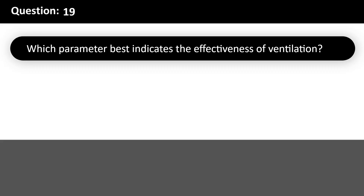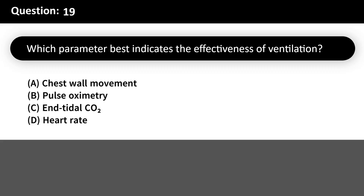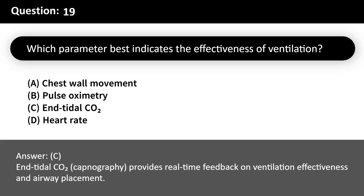Which parameter best indicates the effectiveness of ventilation? A. Chest wall movement. B. Pulse oximetry. C. End-tidal CO2. D. Heart rate. Answer: C. End-tidal CO2 (capnography) provides real-time feedback on ventilation effectiveness and airway placement.